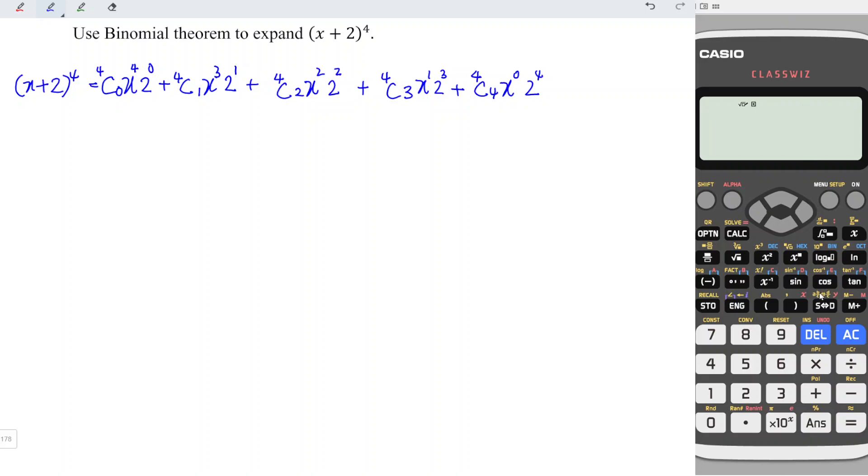Or we could make use of the calculator. So press the value 4, shift divide to get combination C followed by the value 0. Press equal and we should obtain the value equal to 1.